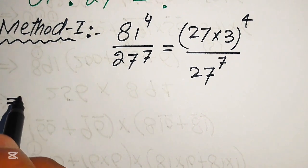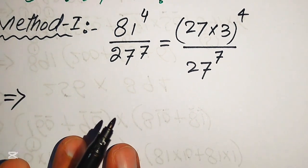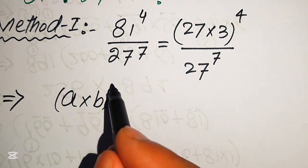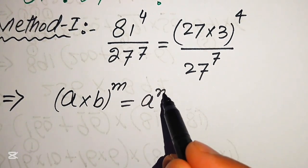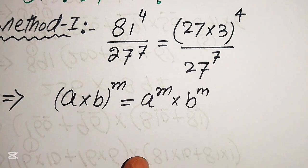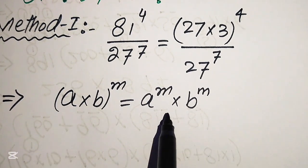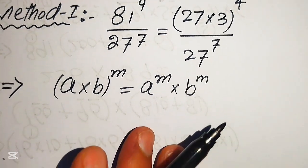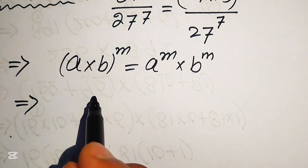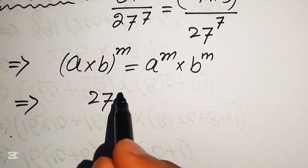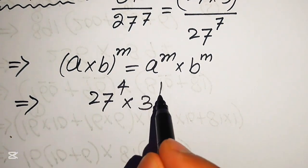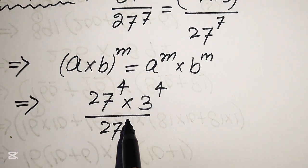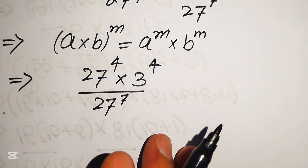Now we need to apply the exponent law. According to this law, if we have (a multiplied by b) to the power of m, it is written as a to the power of m multiplied by b to the power of m. Applying this, the exponent 4 distributes on both values, giving us 27 to the power of 4 multiplied by 3 to the power of 4, divided by 27 to the power of 7.